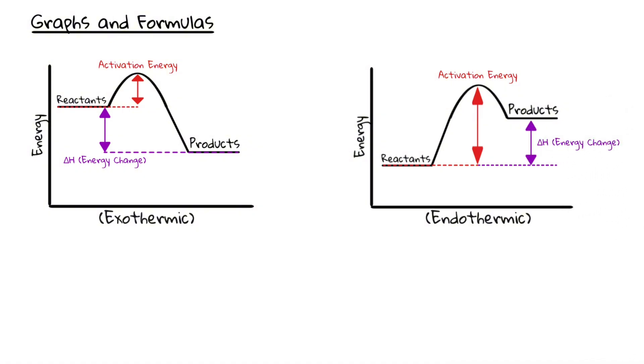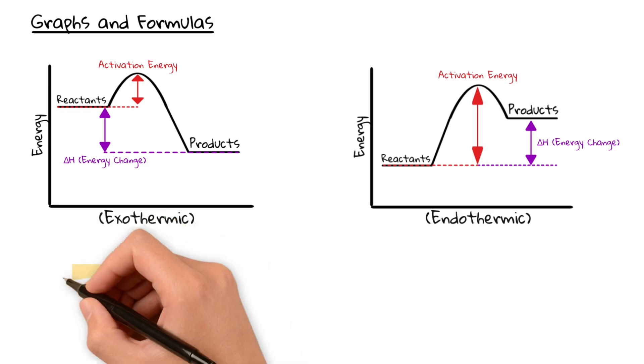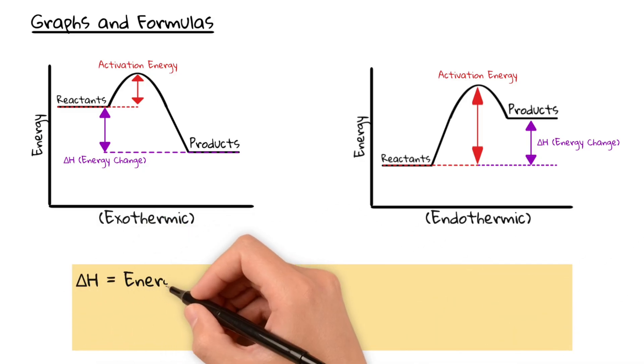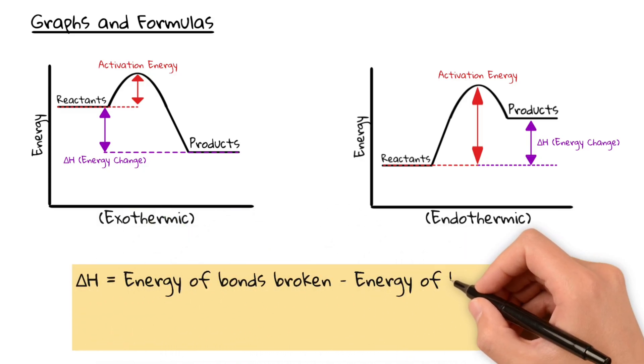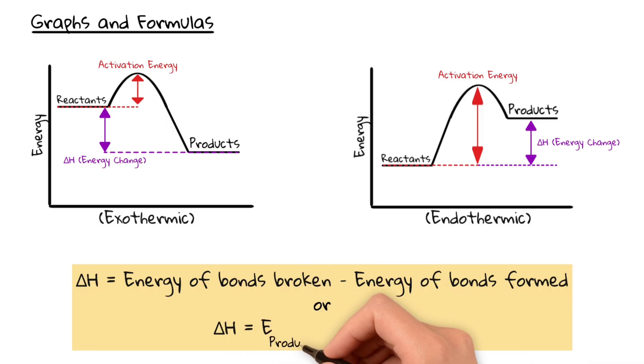To calculate the energy change, delta H, we use the following formula. Delta H equals the energy of the bonds broken minus the energy of the bonds formed.